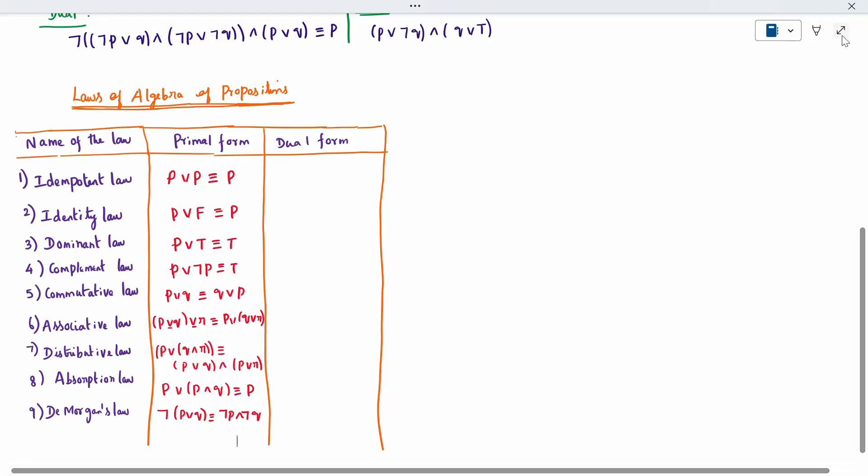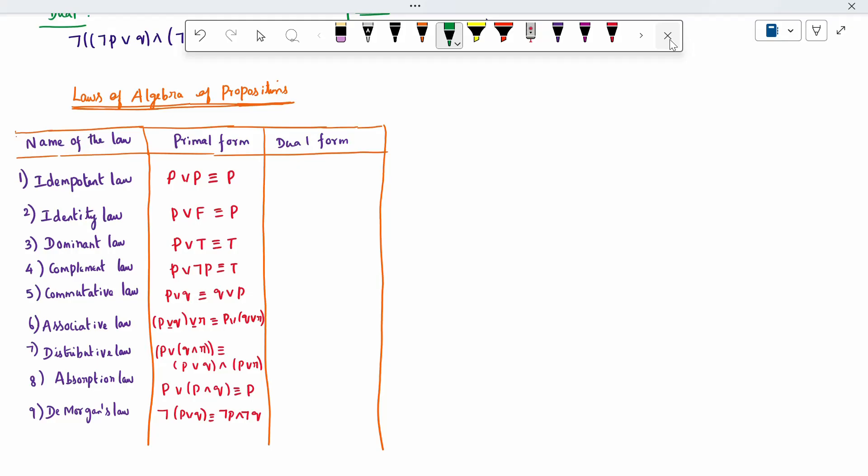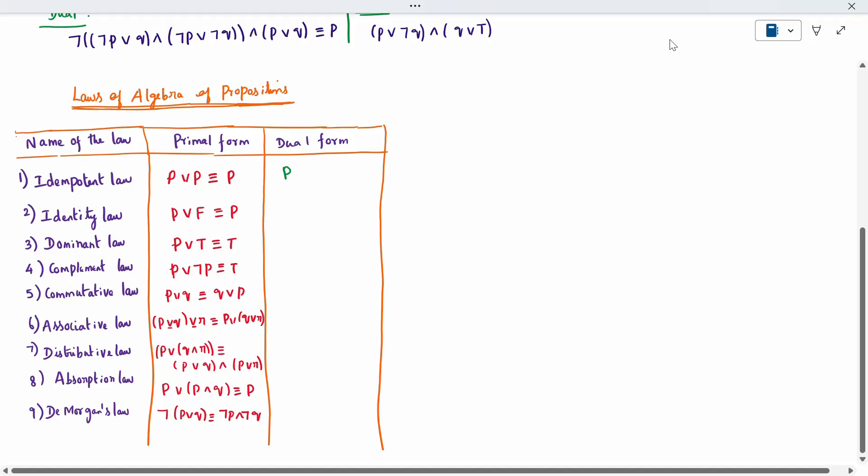The same set of formulas, we write it in terms of opposite symbol. Dual. For example, only one set you study, then it will be the other set. It is easy. Now, I have to change only the symbol.